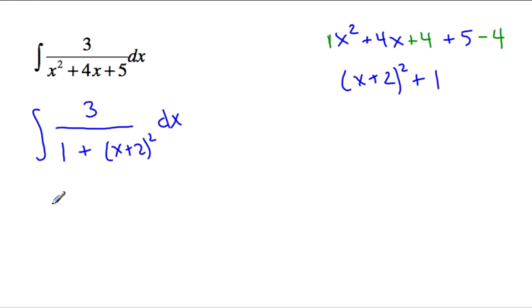which means it could be an arctan. So, we'll just bring the 3 out, so 3 arctan of x plus 2 over a, which is 1, and then over a right here, which is just 1. So here is our answer.